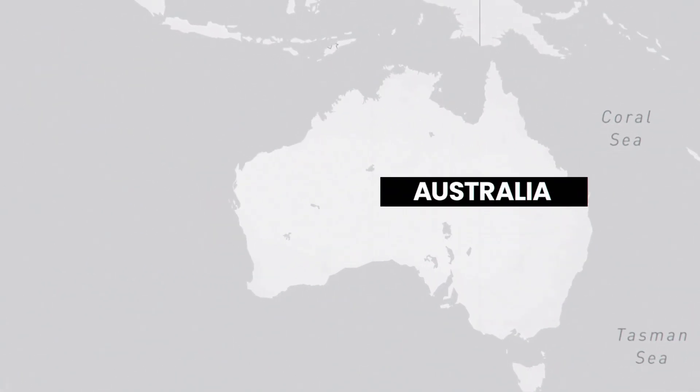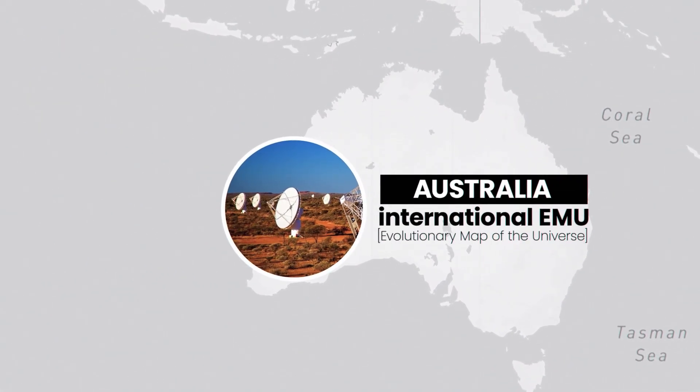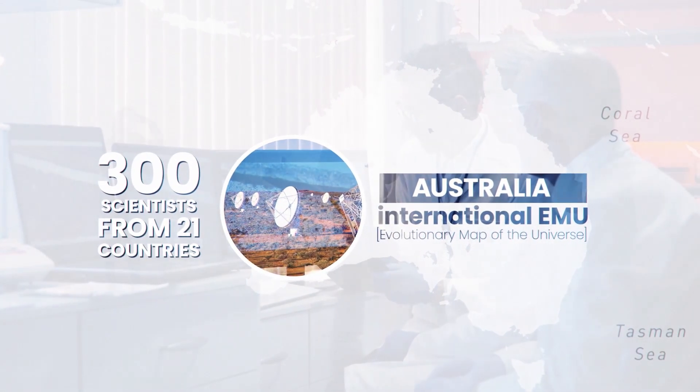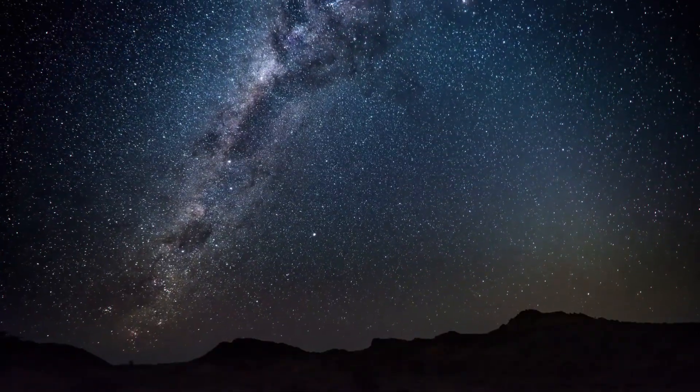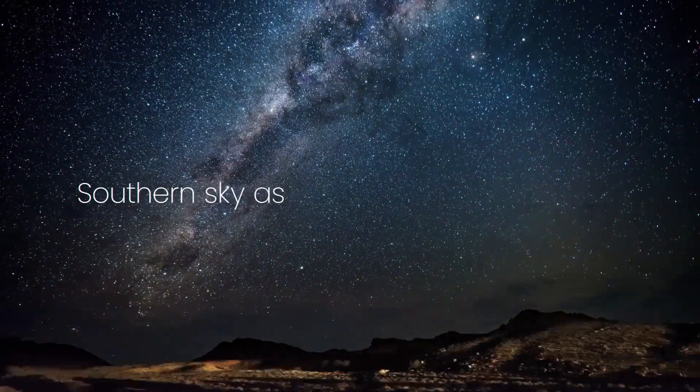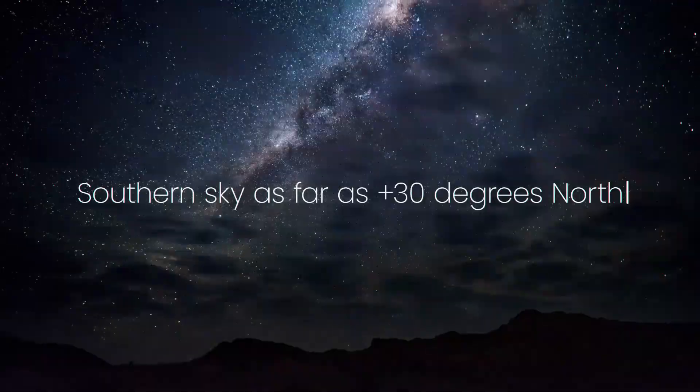Based in Australia, the International EMU Project has a team of over 300 scientists from 21 countries. The job of this team is to survey the entire southern sky as far as 30 degrees north.